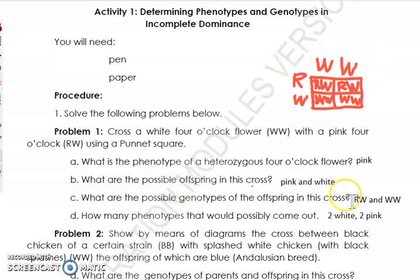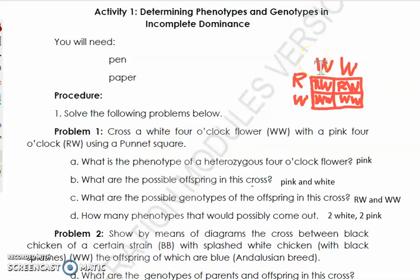Let's apply this in Activity 1. Problem 1: cross a white four o'clock flower (WW) with a pink four o'clock flower (RW) using a Punnett square. The genotype for white is WW, and the genotype for pink is RW. Combine them: R×W = RW, R×W = RW, W×W = WW, and so on.